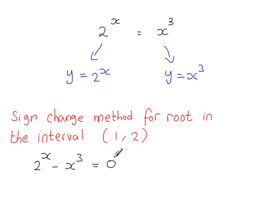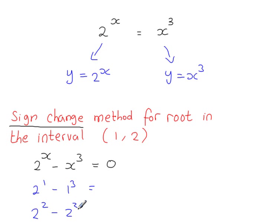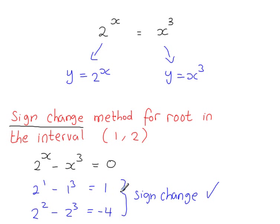The equation must be equal to zero, so 2^x − x³ = 0. You always need the equation to equal zero to use the sign change method. Substituting x = 1 gives 2 − 1 = 1, and substituting x = 2 gives 4 − 8 = −4. There is a sign change — a positive value and a negative value — which means there is a root between these two x values.